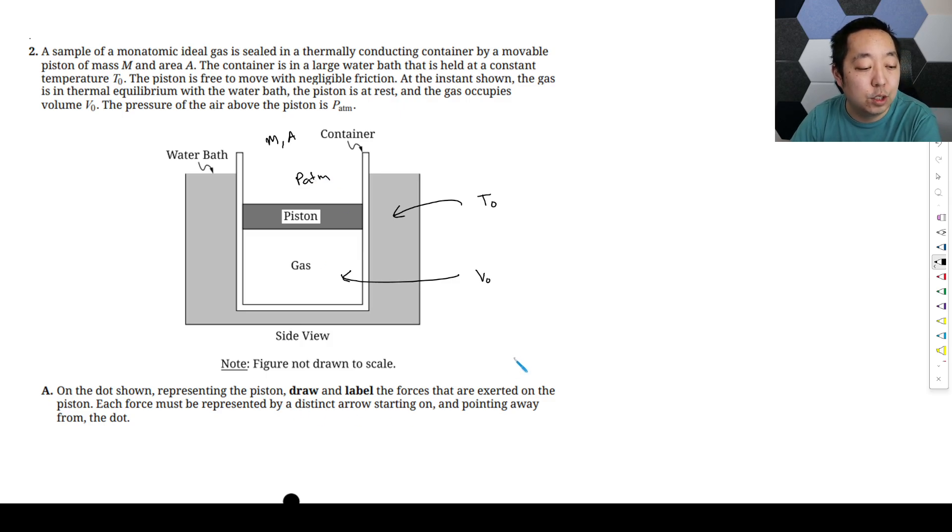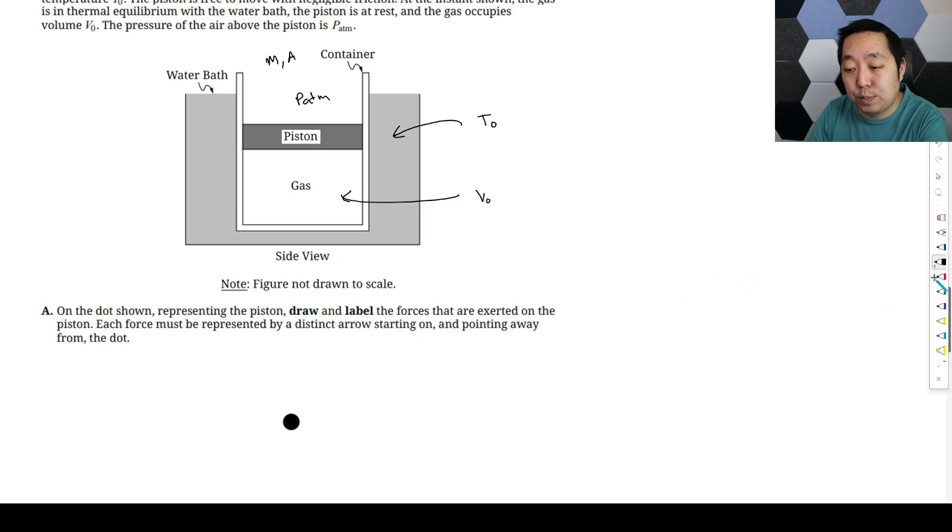On the dot representing the piston, draw and label forces that are exerted on the piston. Each force must be represented by a distinct arrow. The piston has mass, so there's gravity. What else do we include? Anything that's touching it? Nothing else is physically touching it, but we have gas exerting some pressure. So this is going to be a force from the gas. And then we also have air above it pushing on it, atmospheric pressure, so force from the atmosphere. So we're going to have three arrows like that. We know that because it's at rest and it's just sitting there in equilibrium, the acceleration is zero.